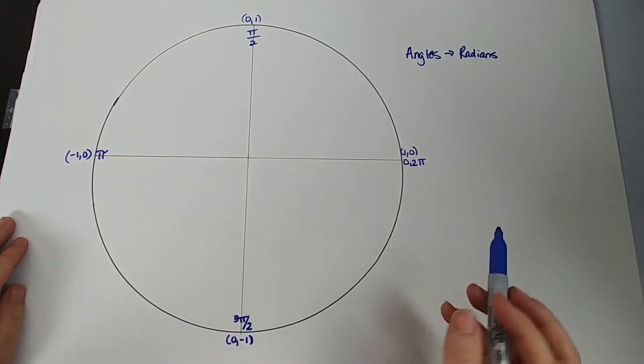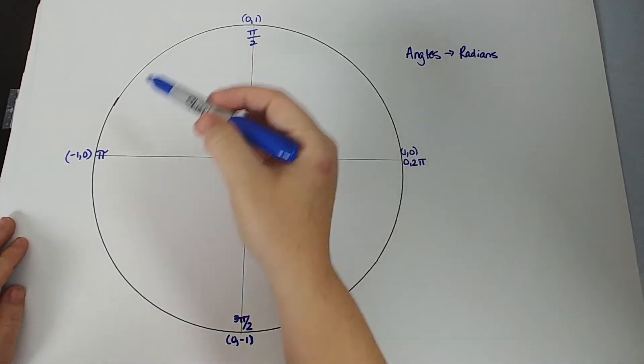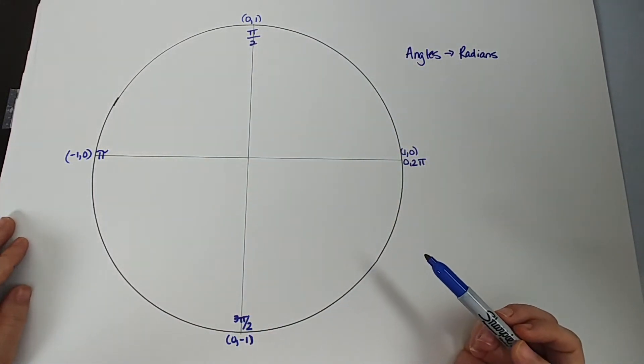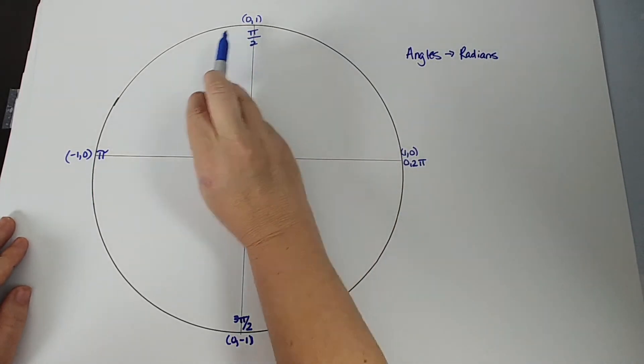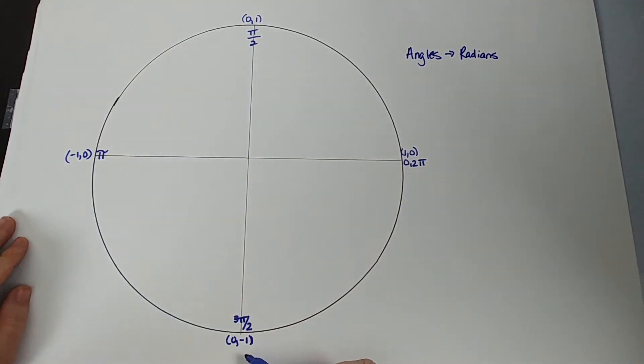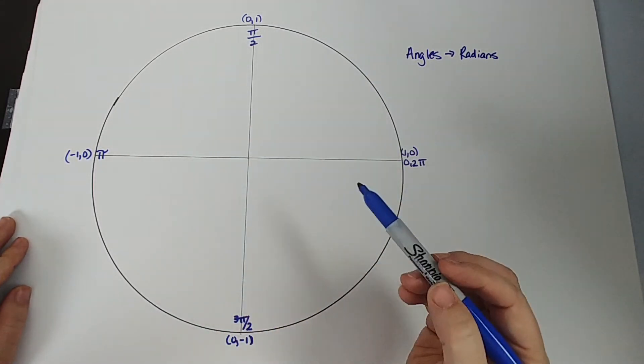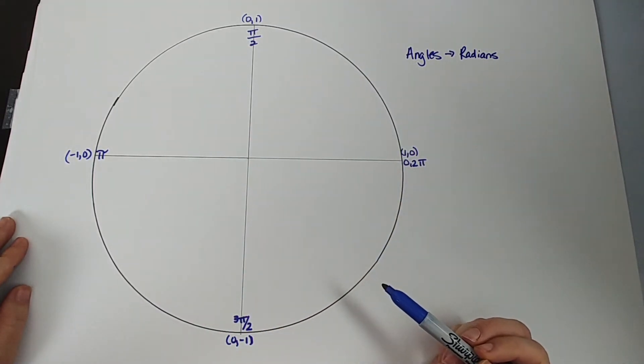We're going to assume you know what a unit circle is. We are also going to assume that you are familiar with the four corners. Yes, I know a circle can't have corners, but it's kind of what we call it. We know that this is (1,0), (0,1), (-1,0), (0,-1). That's what the unit circle is, right? A circle that has infinitely many radii with a length of 1.